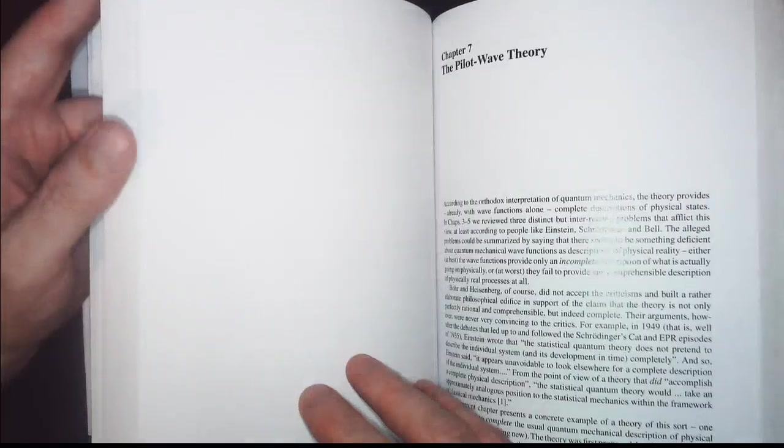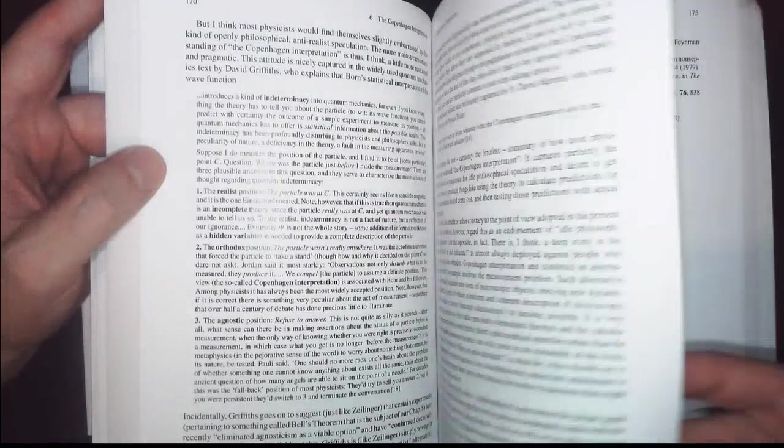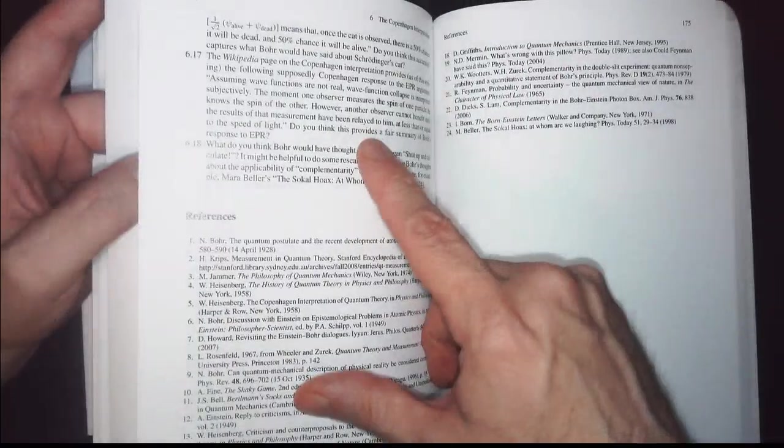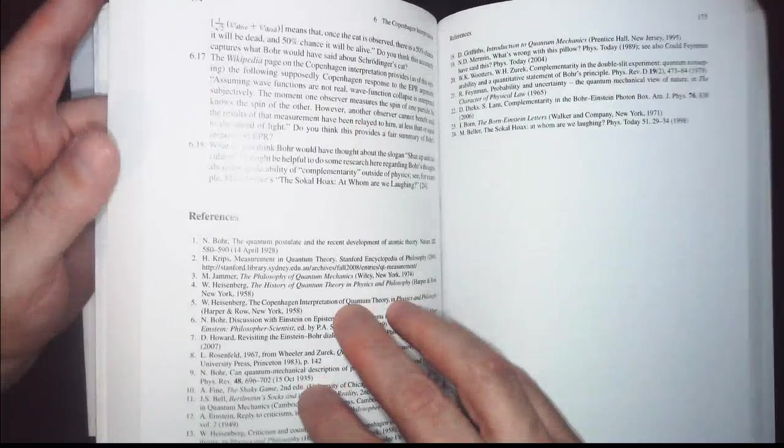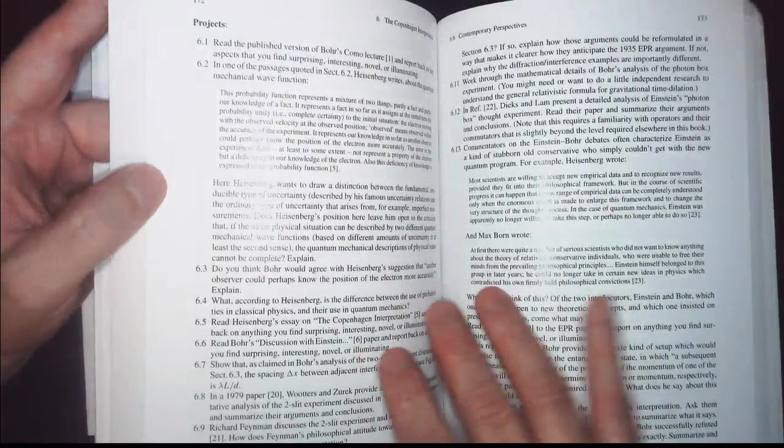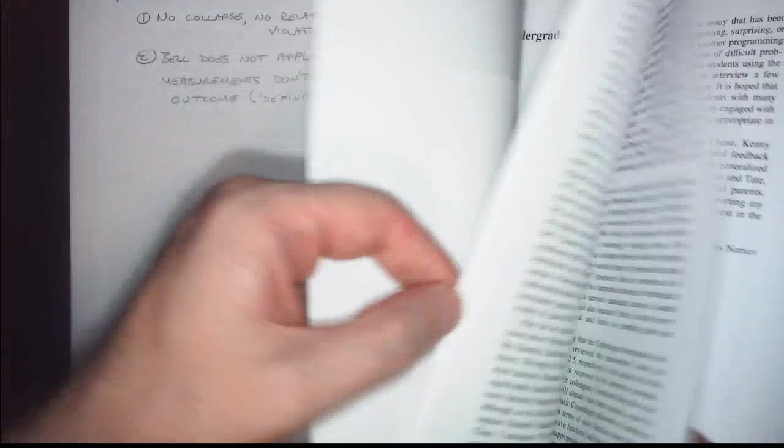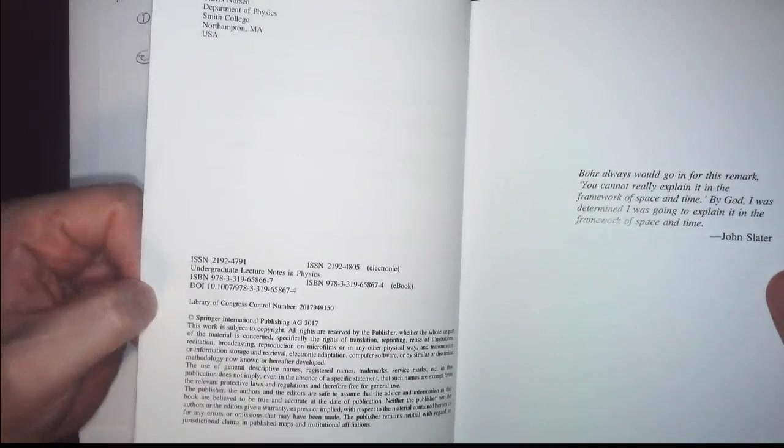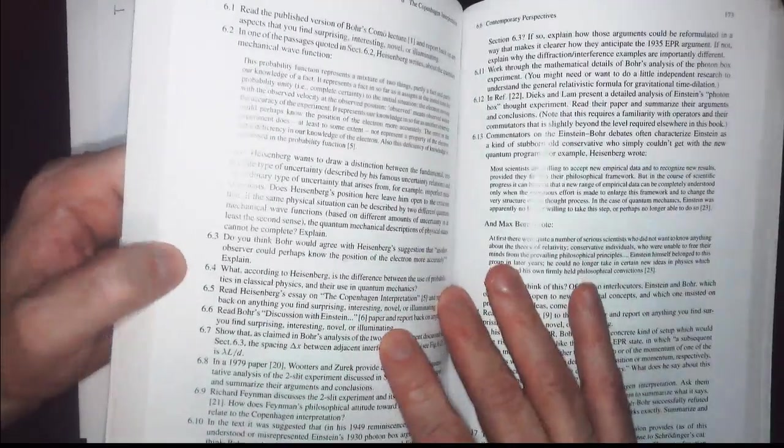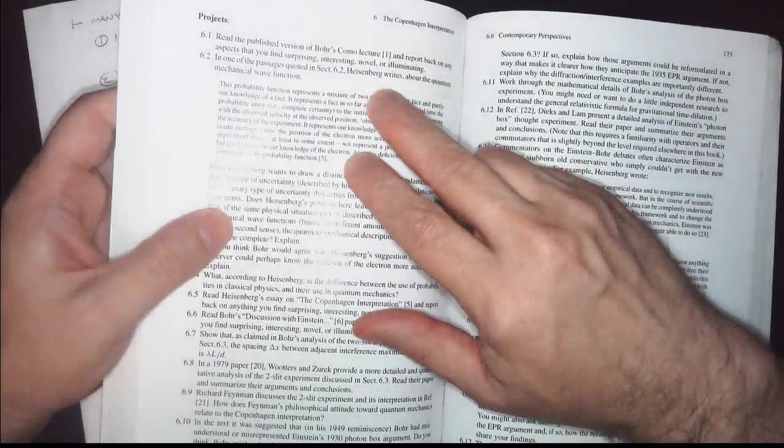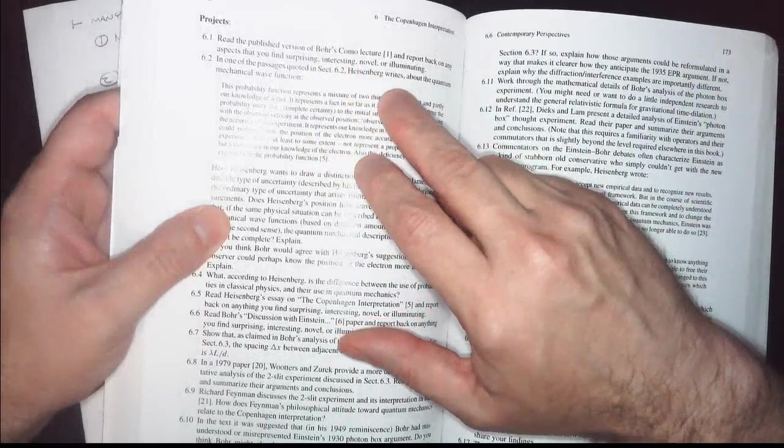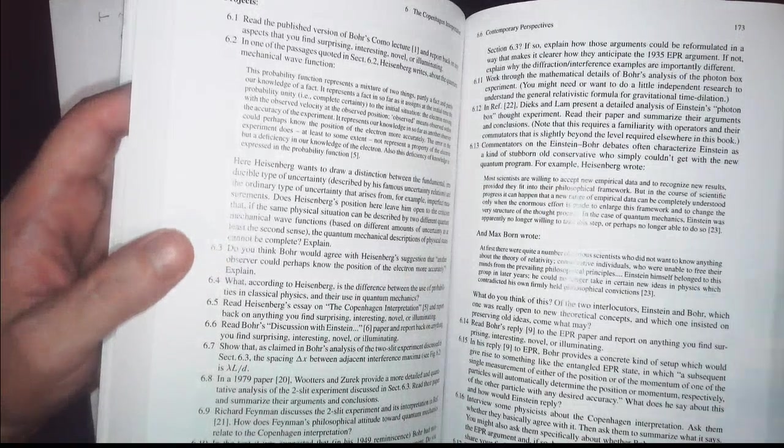And then, the interesting thing here was, oh, look, there's a Wikipedia problem. So now you don't know if that's actually true. Because, when was this published? It was published in 2017. So it's had four years to change. But rather than having problems, this has projects. So read Bohr's Como Lecture and report in any aspects you find surprising, interesting, novel, or illuminating. So these are many things that you can do.